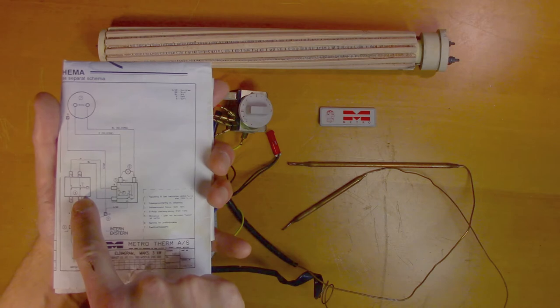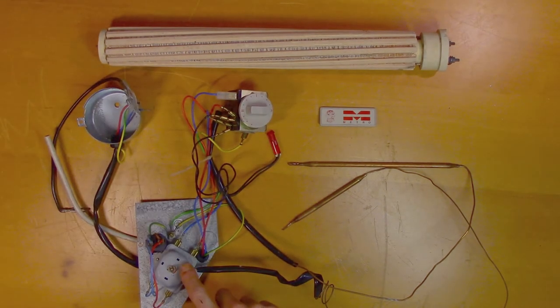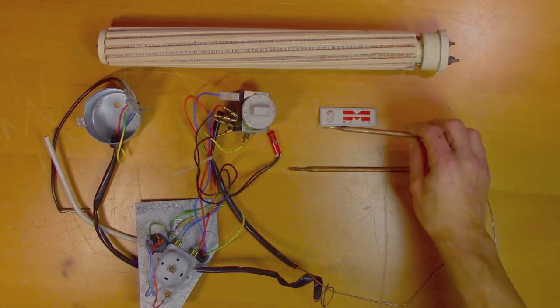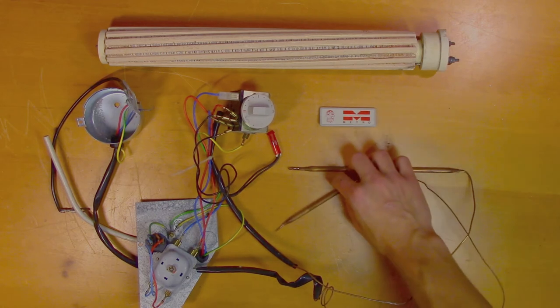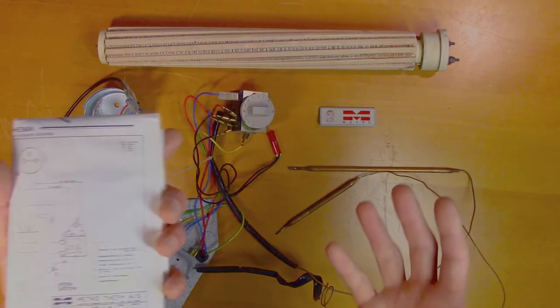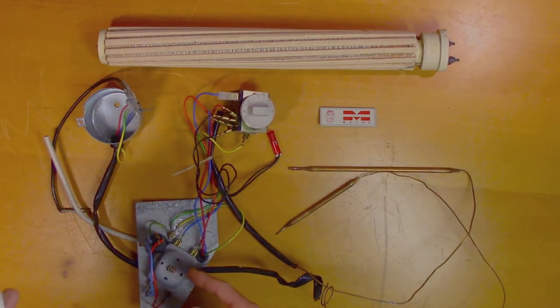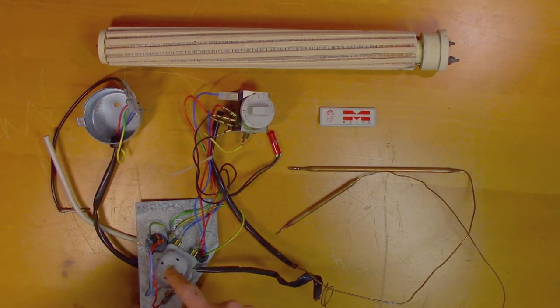It then goes to this over temperature fuse which is this box right here. And it uses this small copper rod to measure the operating temperature. And if it gets too hot it will trip the fuse. So this is a failsafe mechanism.